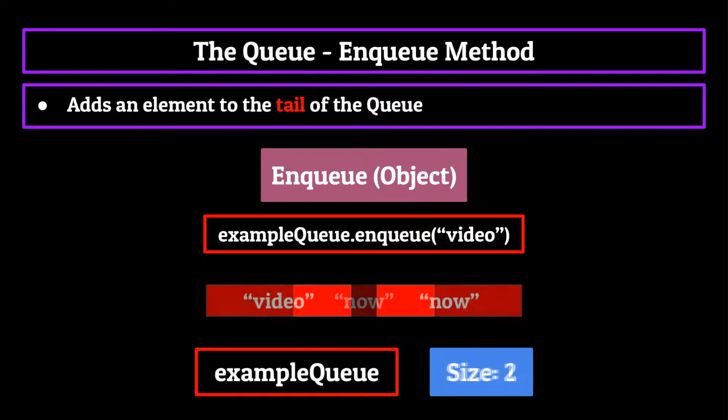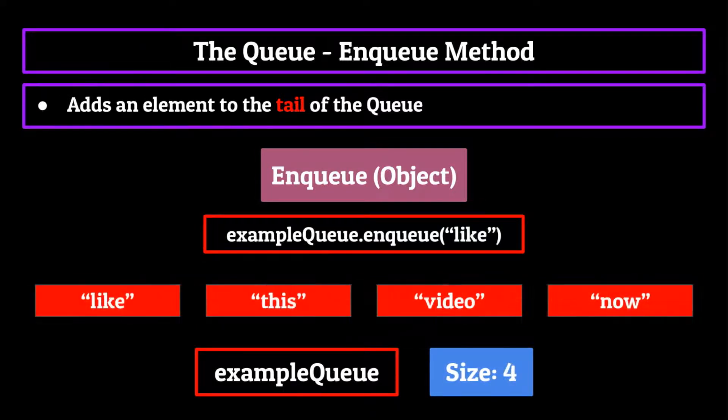Let's fix that by enqueuing a few more completely random strings. If we add video, the size goes to two, we can add this and it goes to three, like makes it four, you get the idea. Now we have a fully functional queue where if we wanted to remove these elements for any reason, we could do so in exactly the same order we added them. Pretty neat.